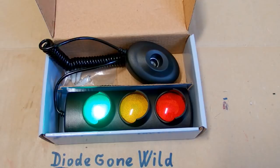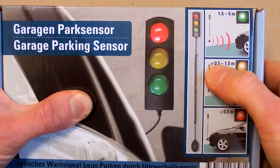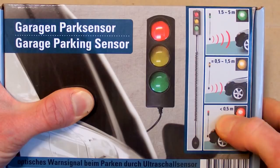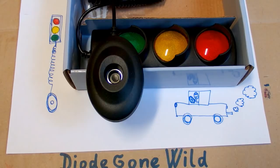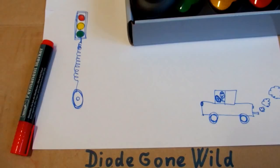So if the distance is 1.5 to 5 meters, it's green. 0.5 to 1.5 meters, it's yellow. And less than half a meter, it's red light. So it seems to have an ultrasonic sensor which is alternating between a transmitter and a receiver.